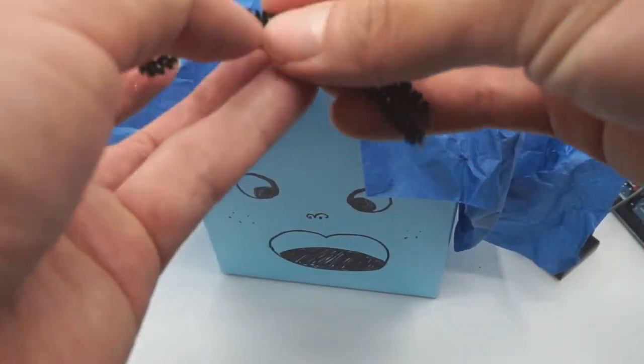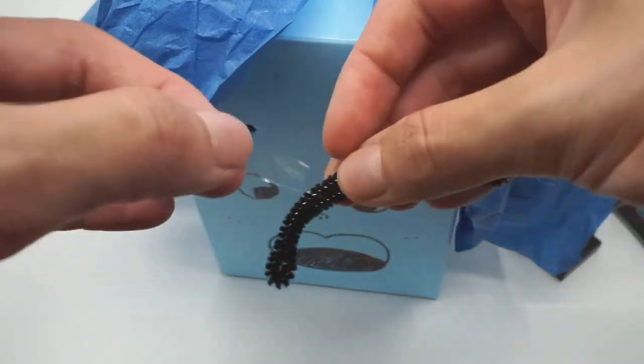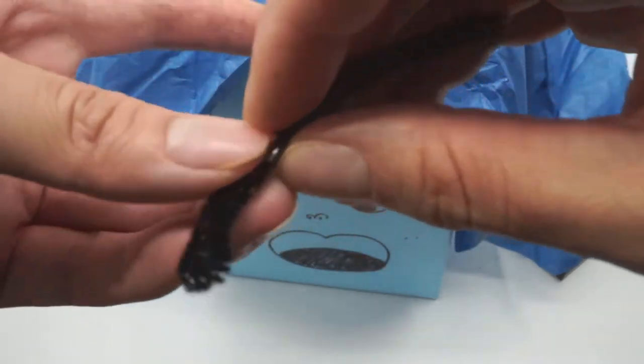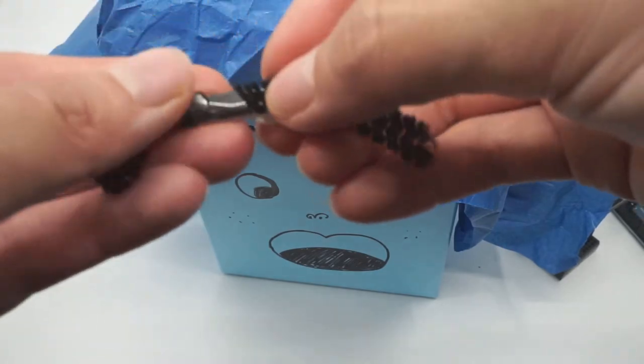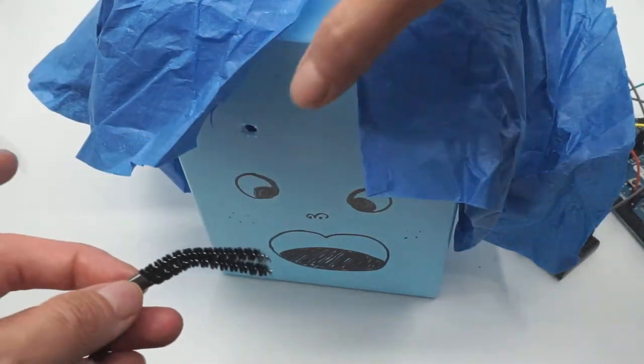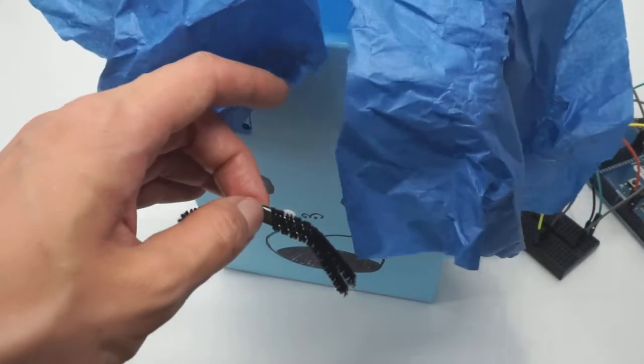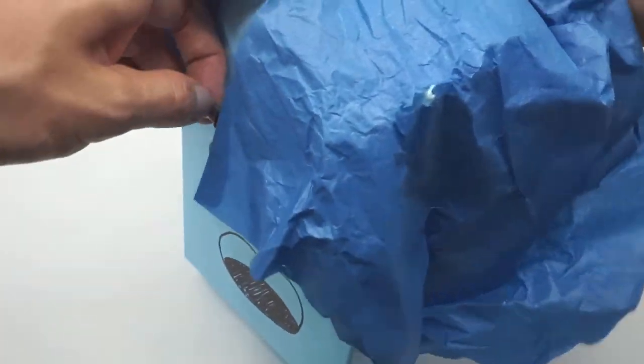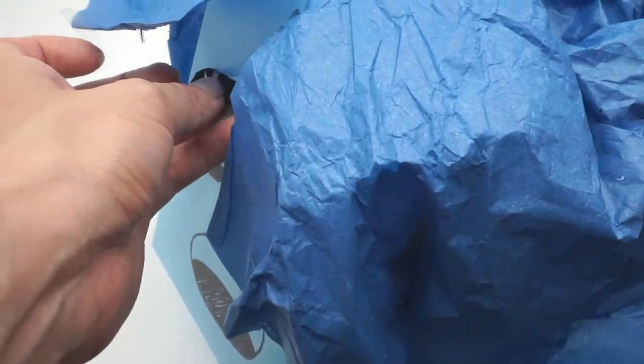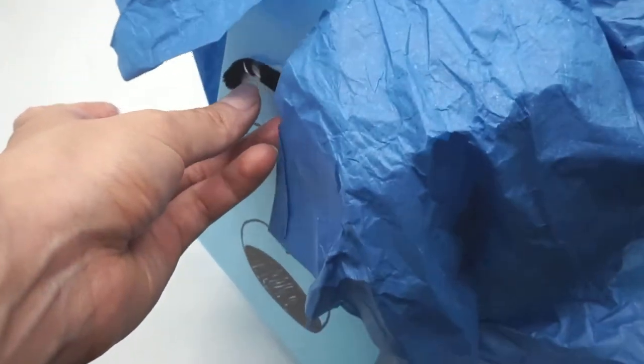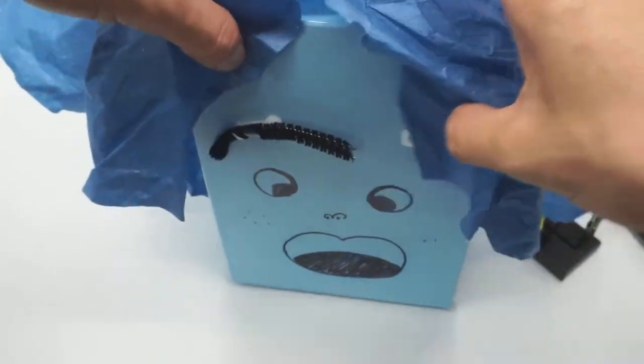Here we have it. Stick the eyebrow and tape it over. I know it's not the prettiest because it's like if you have shiny eyebrows. Okay, one eyebrow done.